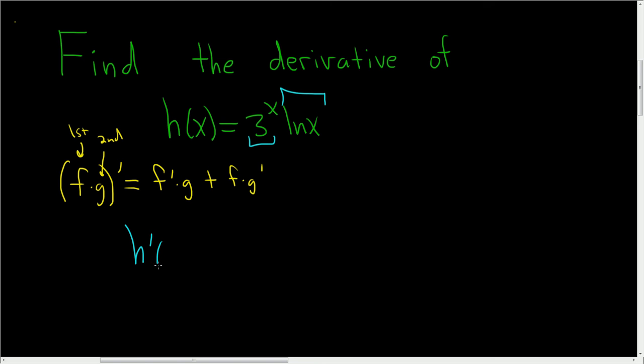So h prime of x, the derivative of 3 to the x is 3 to the x natural log 3, that is our f prime, times the second factor, the natural log of x,